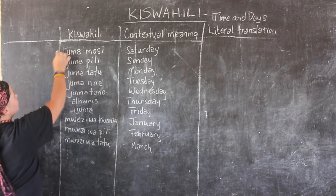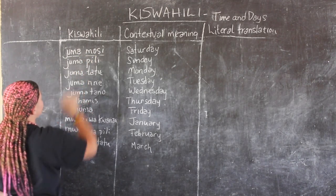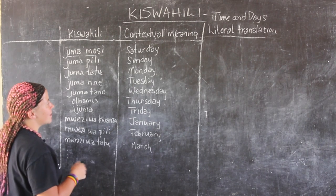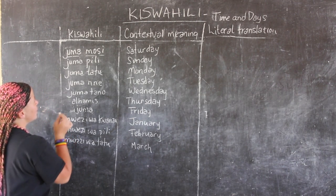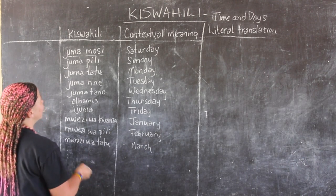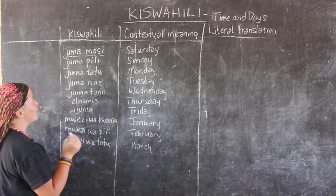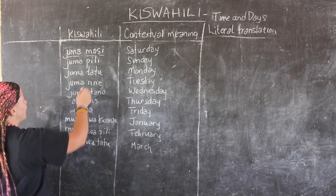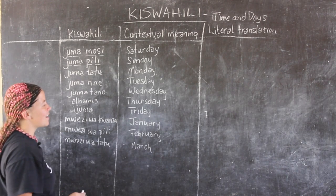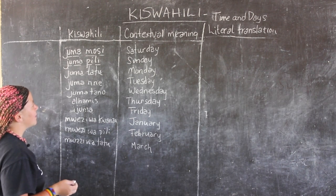We'll continue on with time and days — here we'll look at the days of the week. In Swahili, the week starts on Saturday instead of Sunday. Jumamosi is Saturday — 'juma' means day, and 'mosi' is like one, so the first day. Jumapili is the second day, which is Sunday.